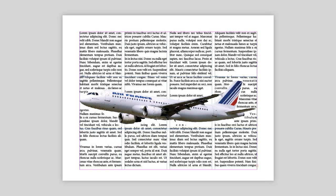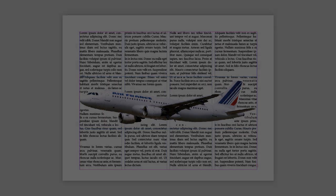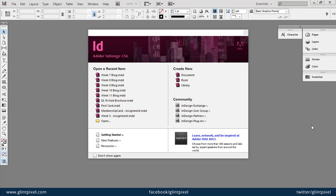Hello friends, once again welcome to Glintpixel channel. Several times you have seen in magazines there is a big or small image in the center of a page and text goes around the image without overlapping it. So let's start and see how we can do this.